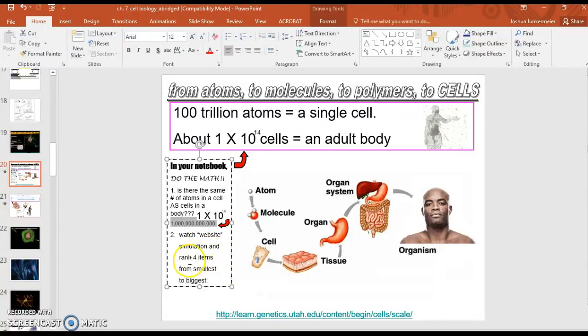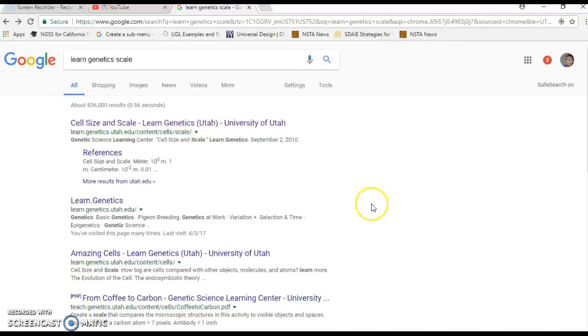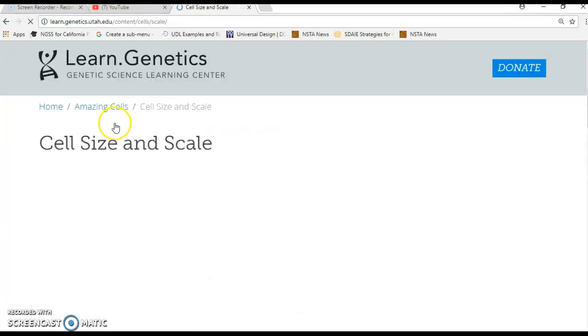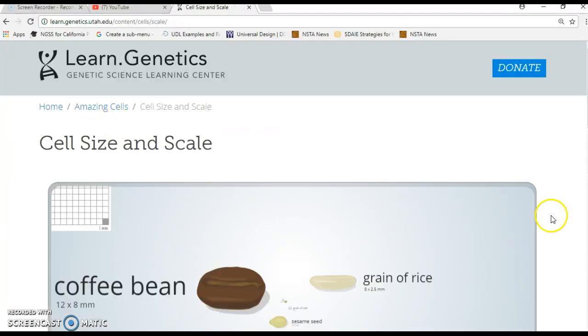All right, then it says, watch website simulation and rank four items from smallest to biggest. So let's check this out. Website simulation. All right, so I got to rank, my job is based on slide 20, I got to rank some items or some materials from smallest to biggest and we're supposed to use a website. So what you do is you Google 'learn genetic scale' and then you get right here, you just click on the result and it'll take you to this right here.